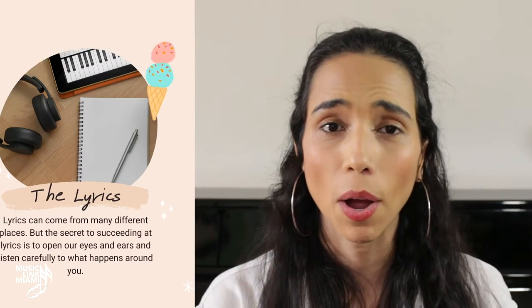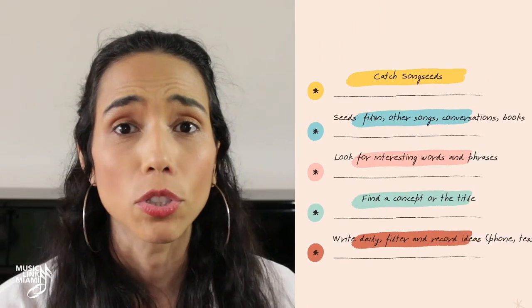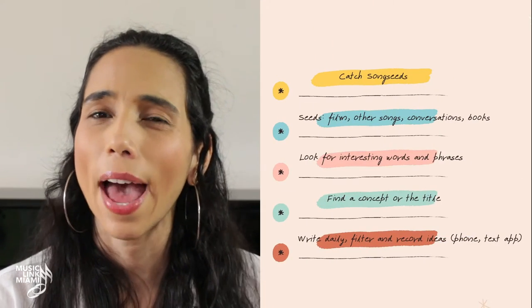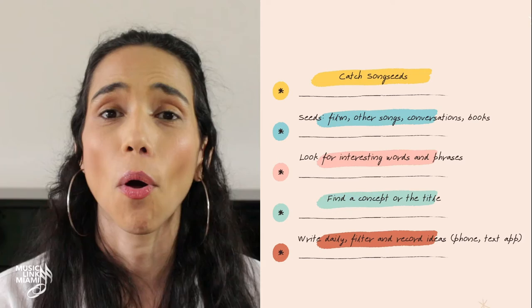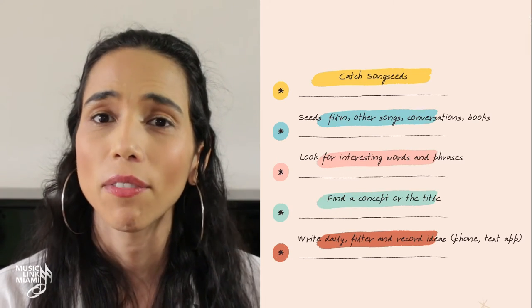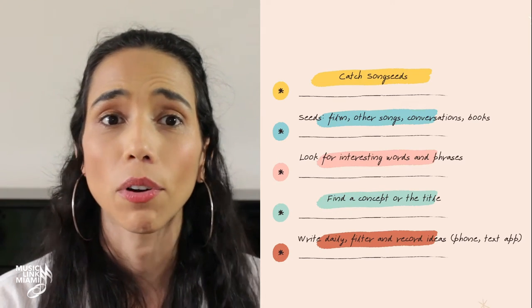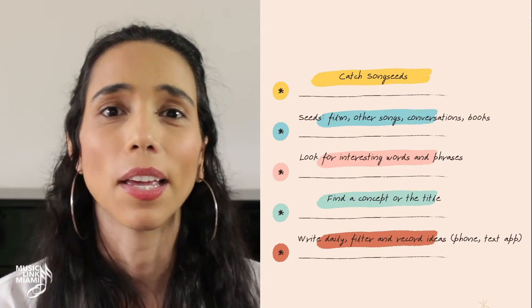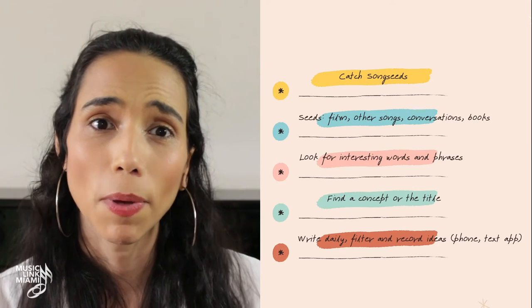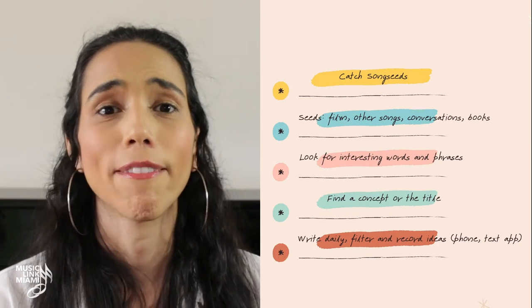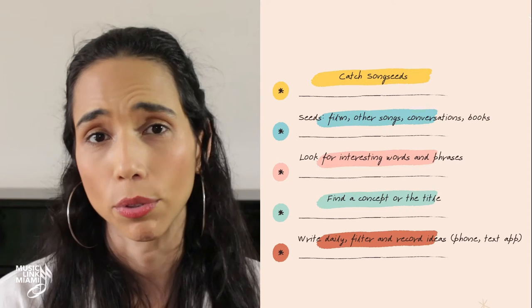Let's talk about lyrics. Lyrics can come from many different places, but the secret to succeeding at lyrics is to open your eyes and ears and listen carefully to what's happening around you. Song ideas can come from that afternoon coffee date with your friend, your own conversations, and even the conversations at the table next to you. They can come from your local newspaper, from the TV news, films, and the books you're currently reading.